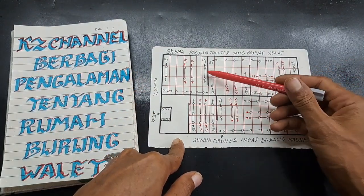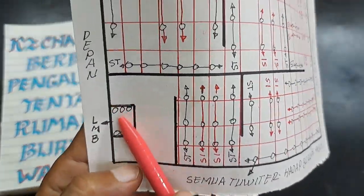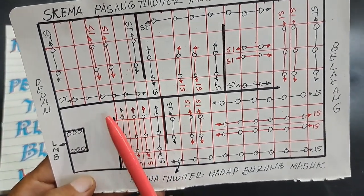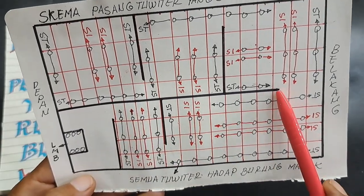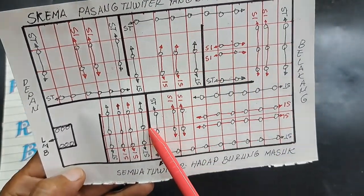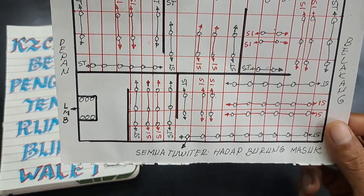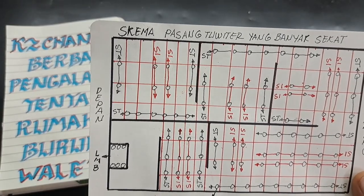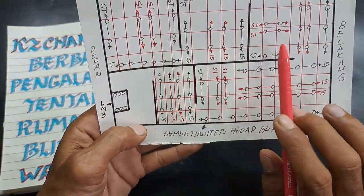Contohnya ini, Kacet sekat seperti ini. Yang hitam-hitam ini sekatan. Contohnya seperti ini, yang hitam ini mulai dari LMB. Kelihatan, ini LMB, ini ruang putar. Kita sekat seperti ini, lar, kita sekat lagi satu ini, lar juga, atau pintu masuk dalam. Pokoknya yang hitam-hitam ini sekatan di dalam ruangan rumah burung walet, satu tingkat, ada dua tingkat, sampai empat tingkat, itu sama fungsinya. Cara pasang twitternya itu sama. Ini Kacet bikinkan satu tingkat saja.